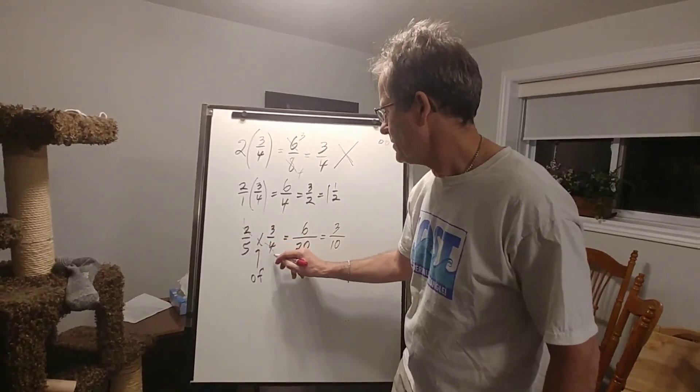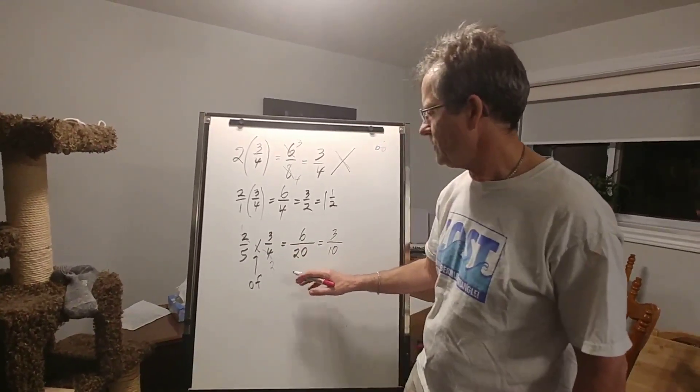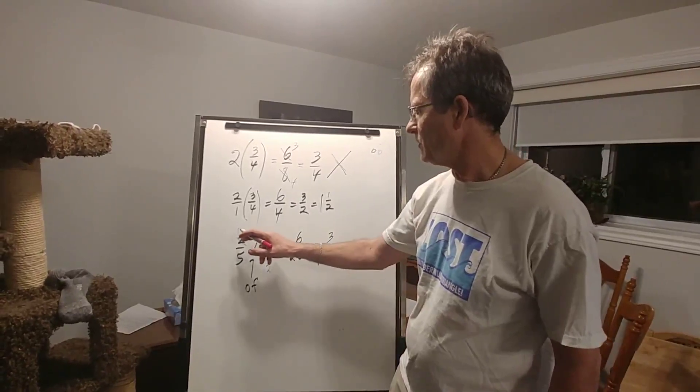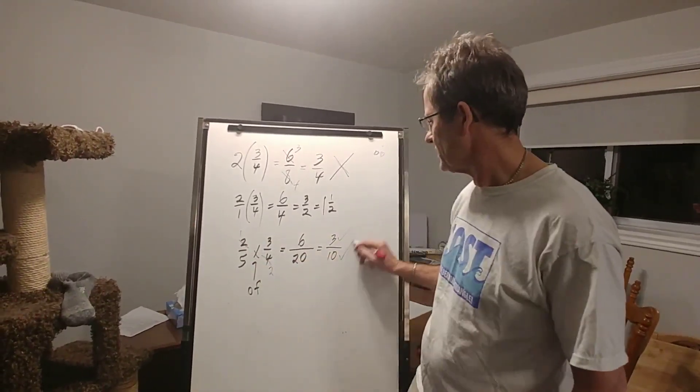Two goes into itself once and goes into four twice. So if I do that reducing first, I can then multiply one times three and get three, five times two and get ten.